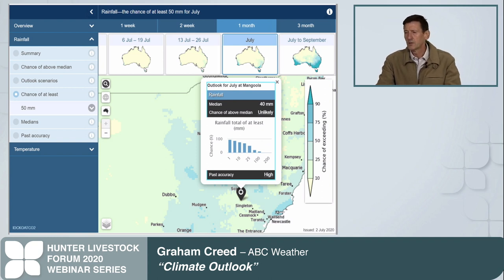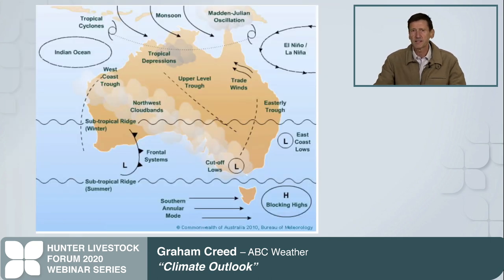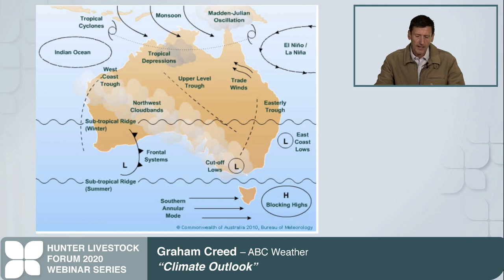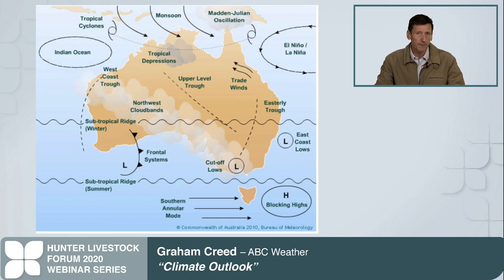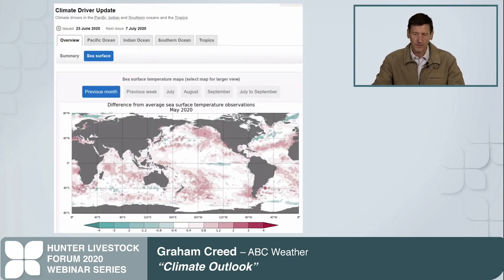One of the key things with using seasonal outlooks is that you really need to get a little bit of understanding on what the key drivers of the climate are, because it helps you understand when you read the notes and summary what is actually being spoken of. For New South Wales there are really four key drivers of climate, particularly for the Hunter: El Niño/La Niña, Indian Ocean Dipole, Southern Annular Mode, and also the Madden-Julian Oscillation. These are all impacting rainfall and temperature across New South Wales at different times of the year.